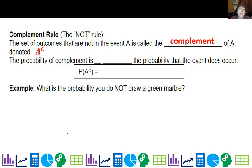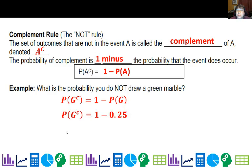So the probability, since they have to add up to 100 percent, is 1 minus the probability the event does occur, which gives you this formula right here. So we know the probability of drawing a green marble is one fourth. What is the probability we do not draw a green marble? Well, if it's 25 percent for a green marble, then it has to be 75 percent against. So there you go. 1 minus 0.25 is 0.75.